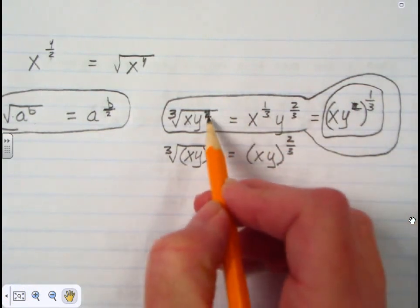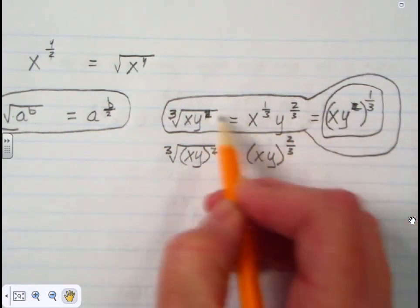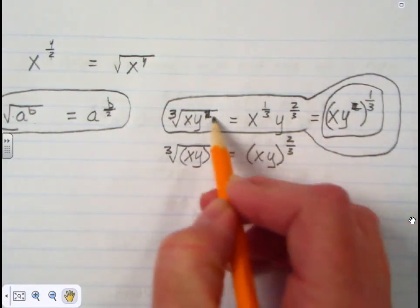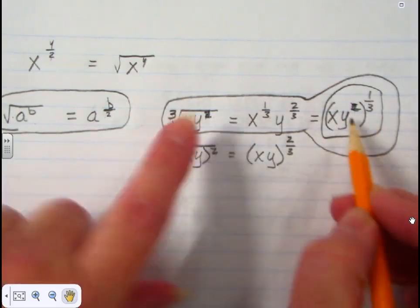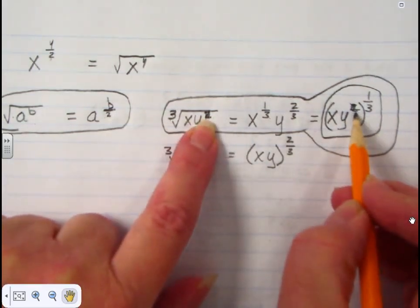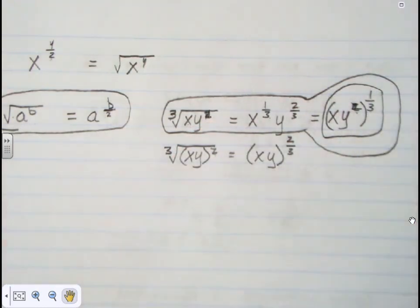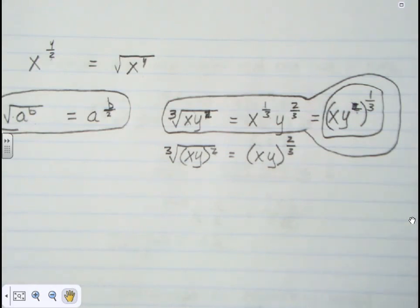If someone asks whether that's a z or a two: if that's a z, it's a z; if that's a two, it's a two. It all acts the same — nothing changes. Things just get rewritten in different ways.